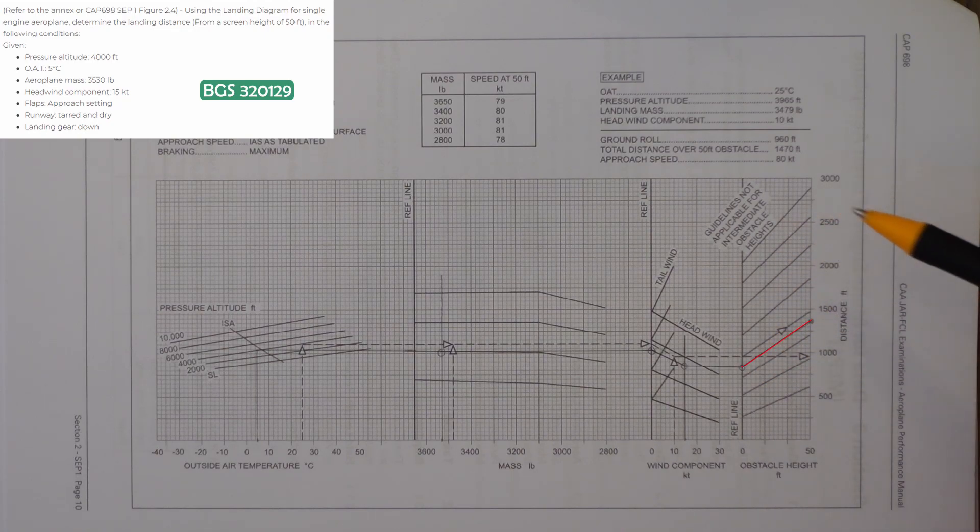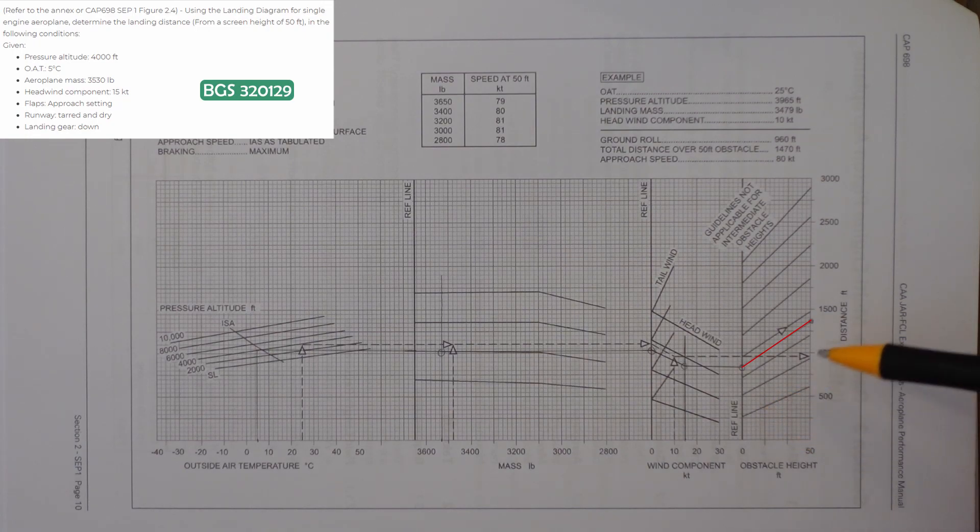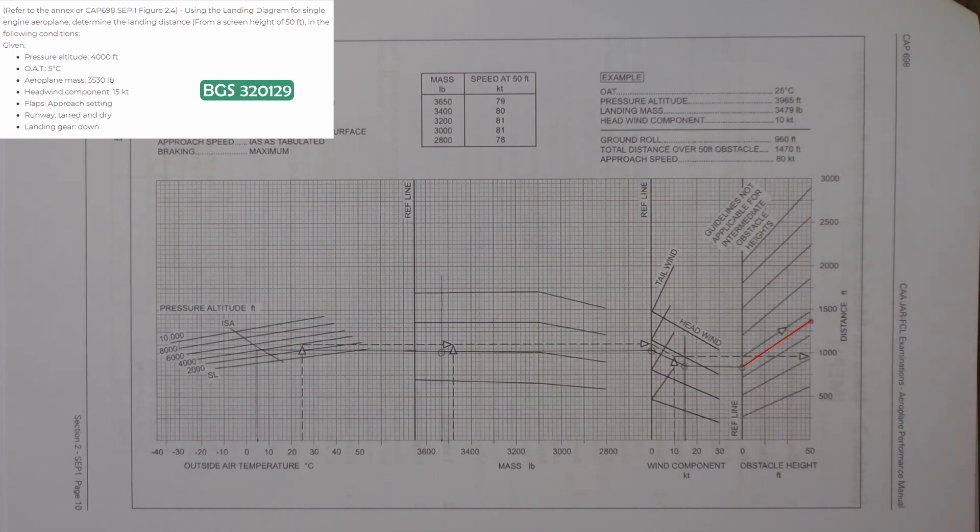From that reference line, we then follow up these next guidelines to clear the applicable obstacle height, which would be the landing distance. We obviously want to clear the obstacles when we're landing and we come up with an answer which is about 1,400 feet.